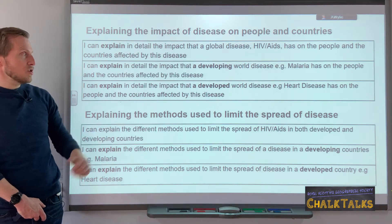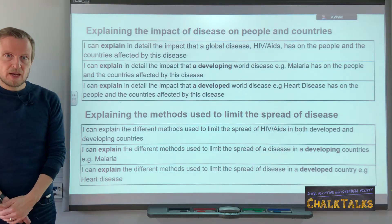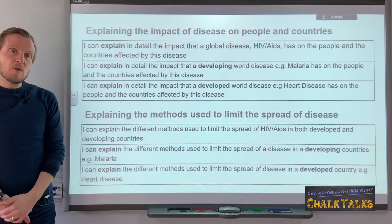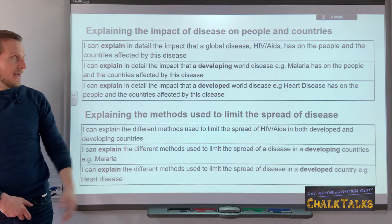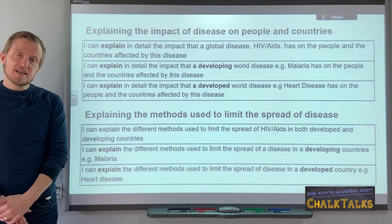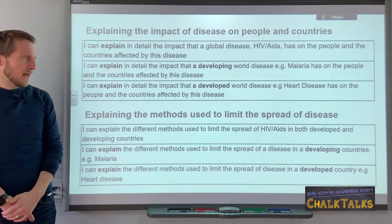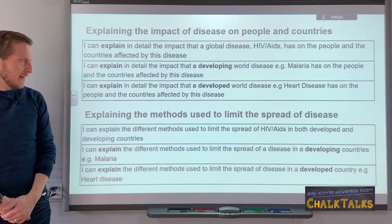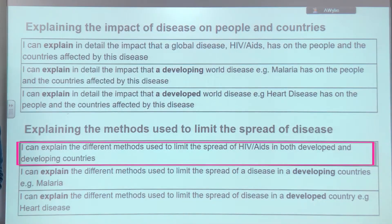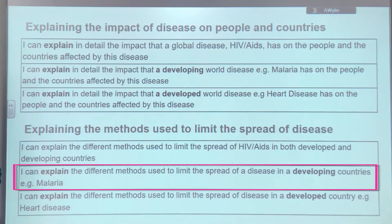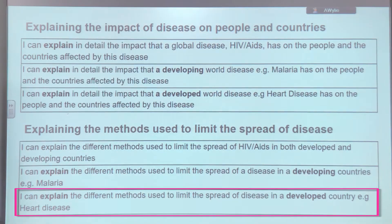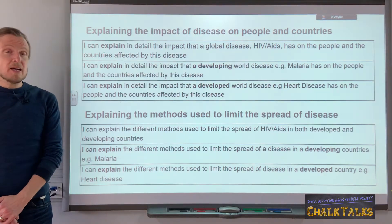Lastly, we can see the explain command word again — this time it is methods used to limit the spread of a disease, which might also be seen as the solutions to the disease. As with the other two explained themes, you have to cover your three diseases again: what are the methods used to limit the spread of HIV, your developing country disease like malaria, and your developed country disease like heart disease? Now that we have looked at the main learning outcomes, let's explore some key exam questions.